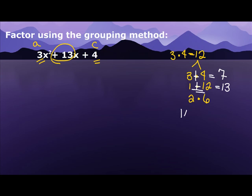So we know that 1x plus 12x equals our 13x. So I'm going to rewrite this expression, 3x squared. But instead of writing 13x, I'm going to write plus 1x, or just x, plus 12x, plus 4.